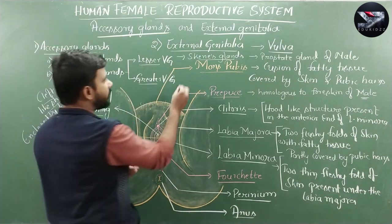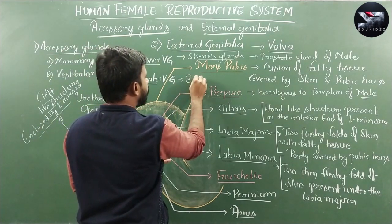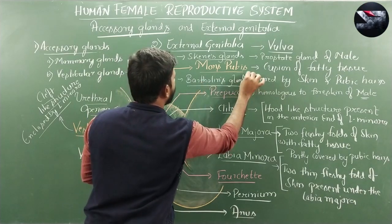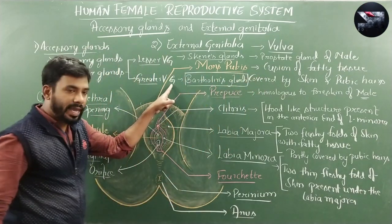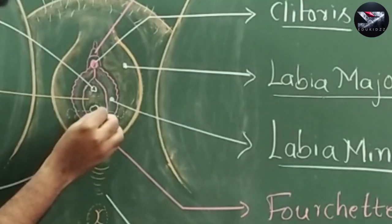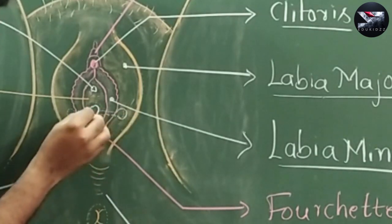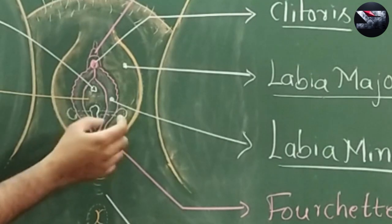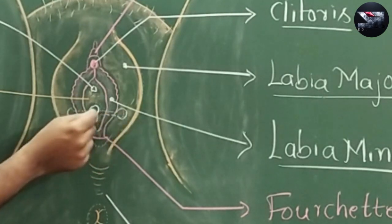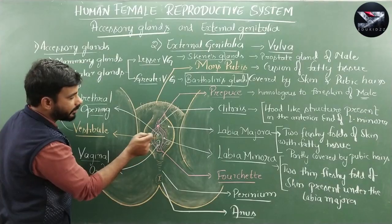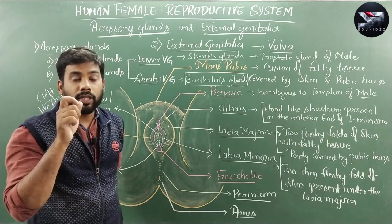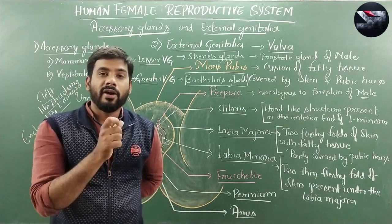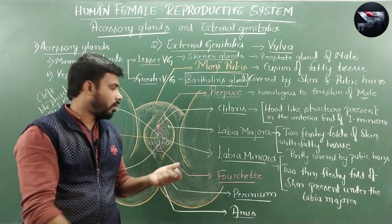Just like the lesser vestibular glands, the greater vestibular glands are also mainly involved in the production of lubricating fluid. They are also called Bartholin's glands. They are paired structures situated on either side of the vagina and found in the labia majora. Their ducts open into the wall of the vagina. These glands secrete lubricating fluid essential for sexual intercourse.